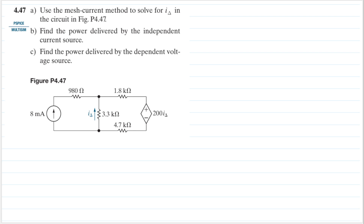Hello, my name is RD and we are going to solve problem 4.47 from Nielsen and Riddle book. The question asks us to use the mesh current method to solve for i_delta in the circuit, find the power delivered by the independent current source, and find the power delivered by the dependent voltage source.